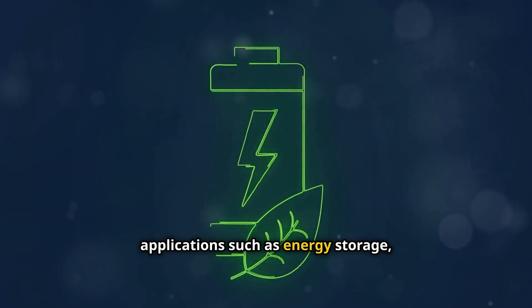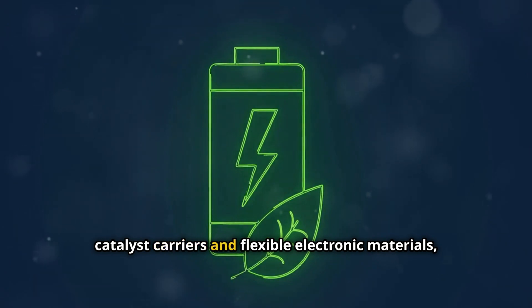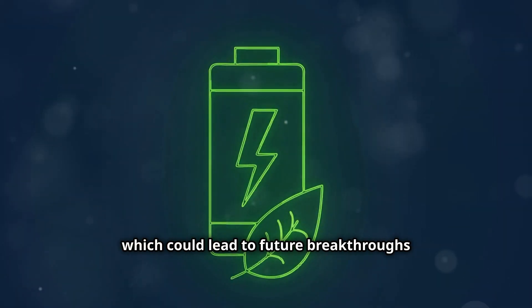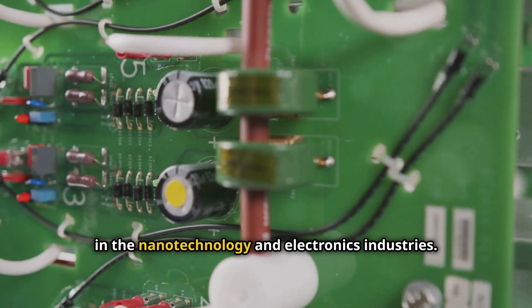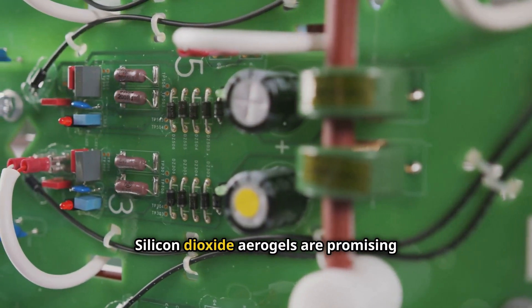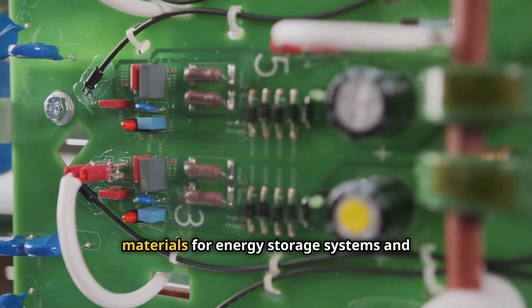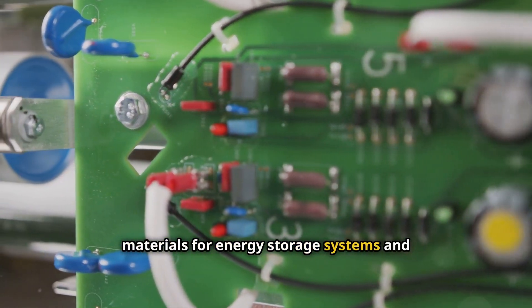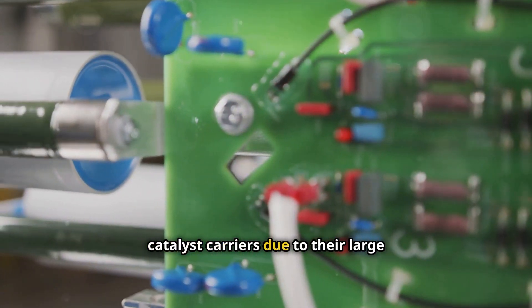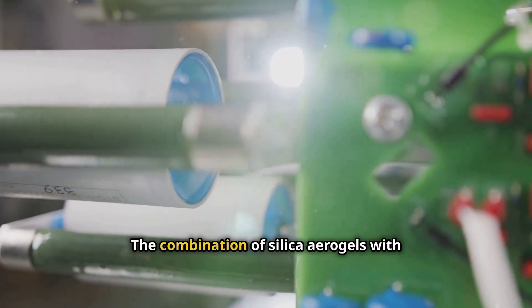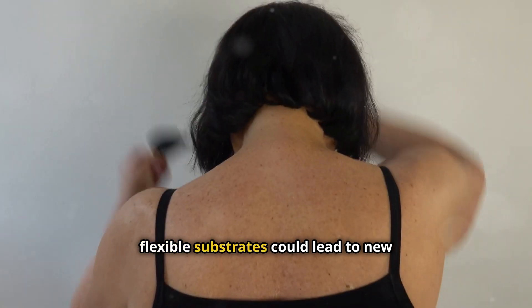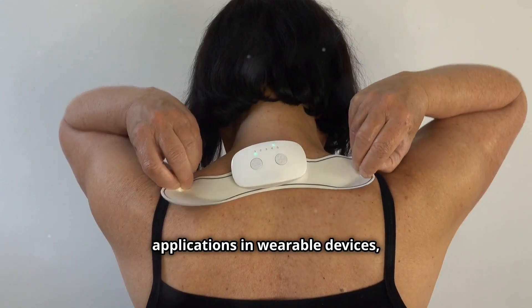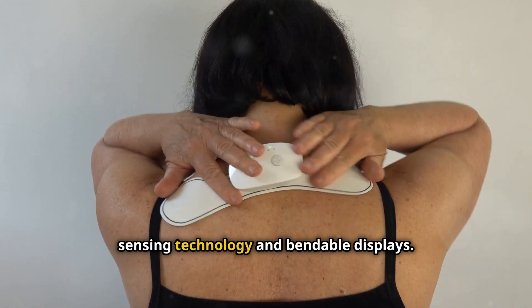Researchers are investigating the potential of aerogels for advanced applications such as energy storage, catalyst carriers, and flexible electronic materials, which could lead to future breakthroughs in the nanotechnology and electronics industries. Silicon dioxide aerogels are promising materials for energy storage systems and catalyst carriers due to their large surface area. The combination of silica aerogels with flexible substrates could lead to new applications in wearable devices, sensing technology, and bendable displays.